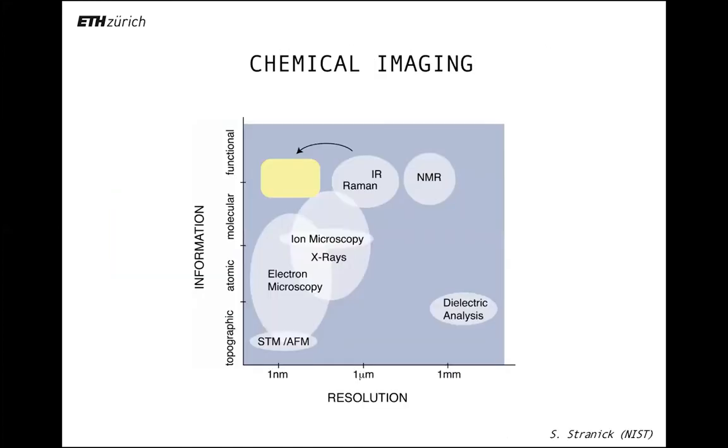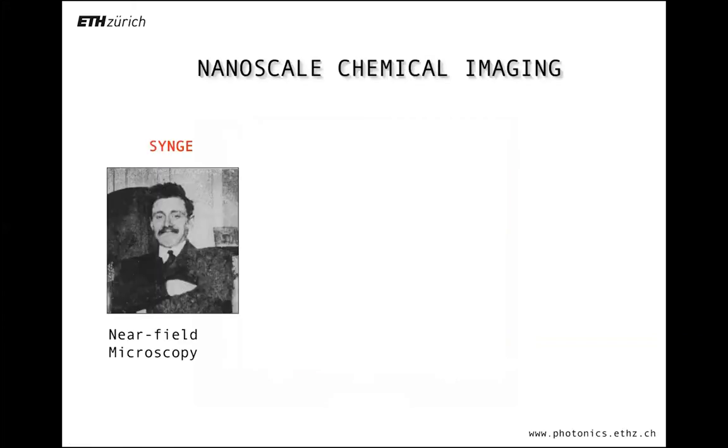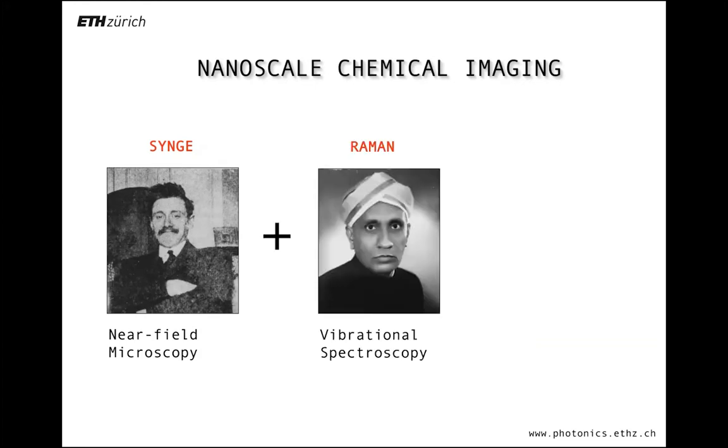What we like to do is to use spectroscopic techniques that typically provide resolutions on the order of a micrometer and push them down to the nanometer scale. The focus is on spectroscopy, trying to understand what the material is if I have no information about the material. We basically want to have molecular and functional information and resolution in the nanometer scale. It's simple: we take Singh, one of the pioneers of near-field microscopy, and we take Raman. The technique is typically called tip-enhanced Raman scattering.